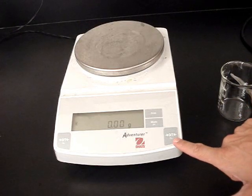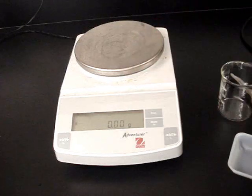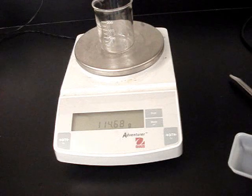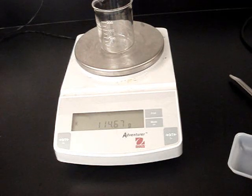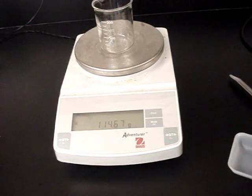And what it does, it basically subtracts whatever's on the balance. Right now you can see that the balance reads zero. If I put an object on the balance, such as this beaker, we can see that the mass has changed. If I hit the tare button, that subtracts it.